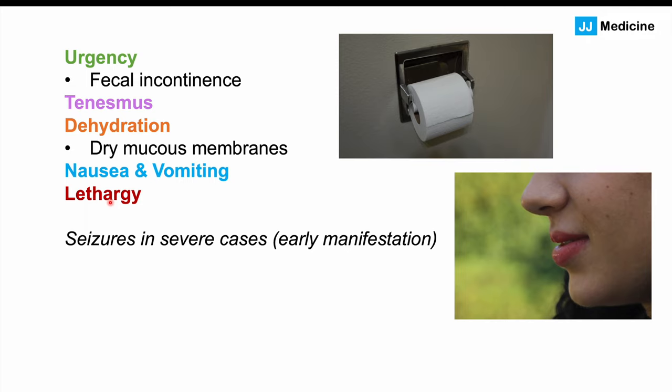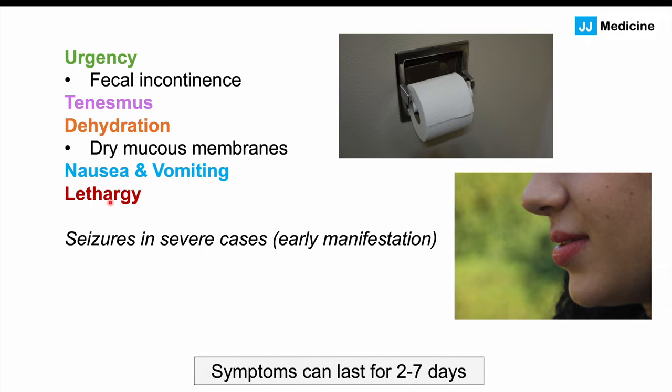Patients at high risk for more severe infection include those with a poor immune system, malnourished children, patients immunocompromised from HIV or AIDS, and elderly patients. Overall, symptoms of this condition can last two to seven days.